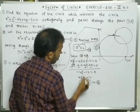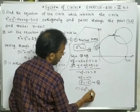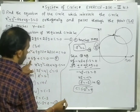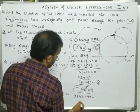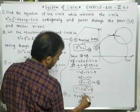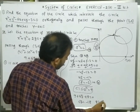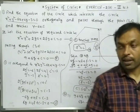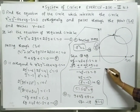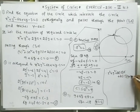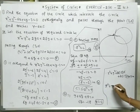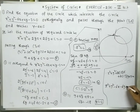Substituting c = 9 into equation 2: 9 + 6g + 9 = 0, so 6g = −18, giving g = −3. Therefore g = −3, f = −3, c = 9. From the general equation: x² + y² + 2(−3)x + 2(−3)y + 9 = 0. Finally: x² + y² − 6x − 6y + 9 = 0 is the required equation of the circle.